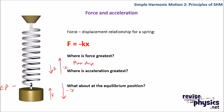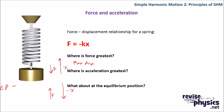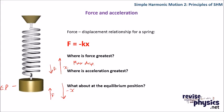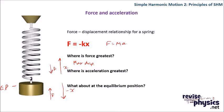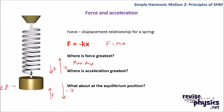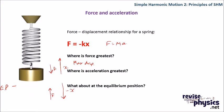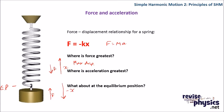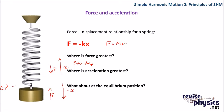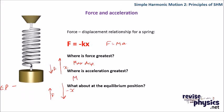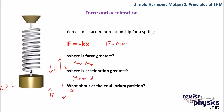Where will the acceleration be greatest? Well, we know that F is minus KX, but we also know that F is equal to MA. So our acceleration here, with the mass remaining constant, is directly proportional to F. If the force is greatest at the maximum displacement, then that means the acceleration is also greatest at the maximum displacement.